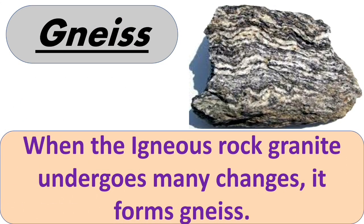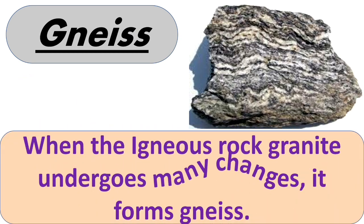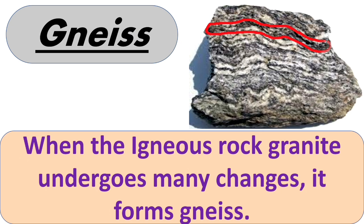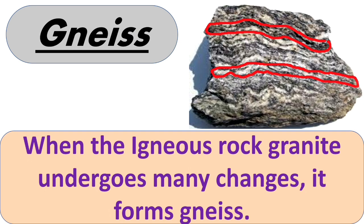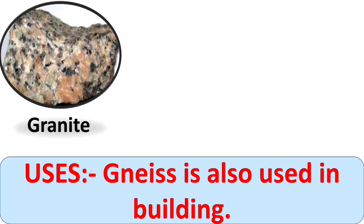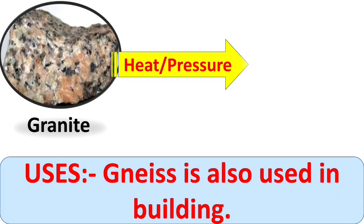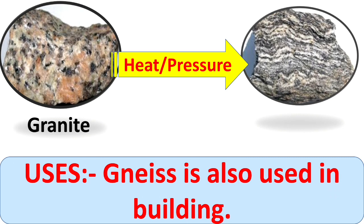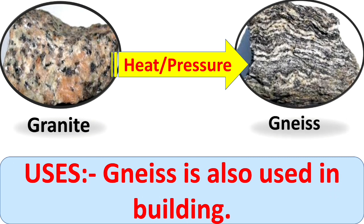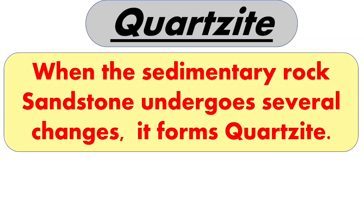Next is gneiss. When the igneous rock granite undergoes many changes, it forms into gneiss. During its formation, the minerals within it get separated and form light and dark bands that can be seen separately. Here you can see this is granite, and when it gets heat and pressure it changes into gneiss, and it is also used in buildings.